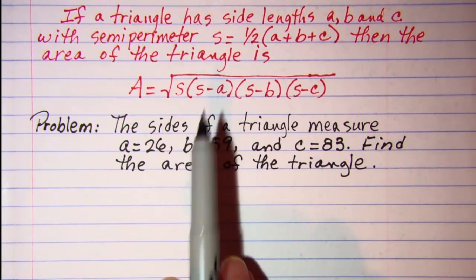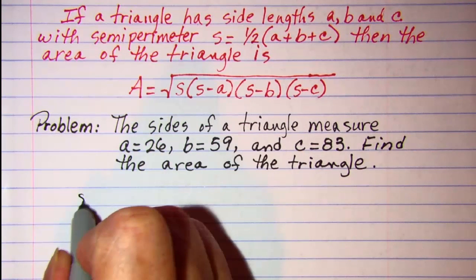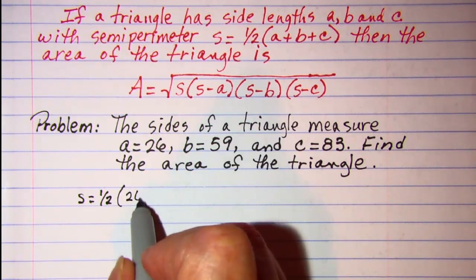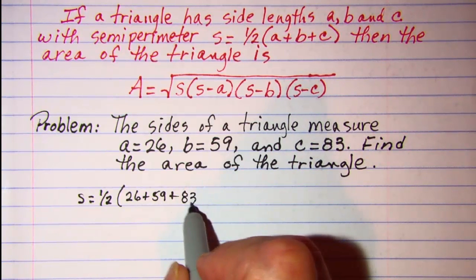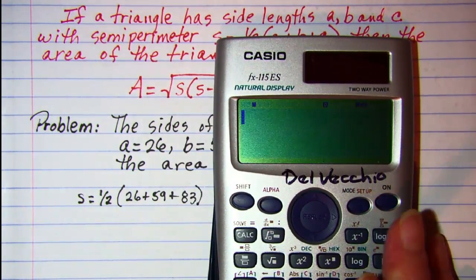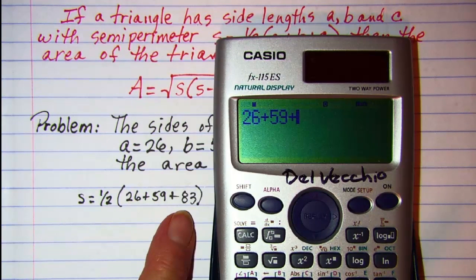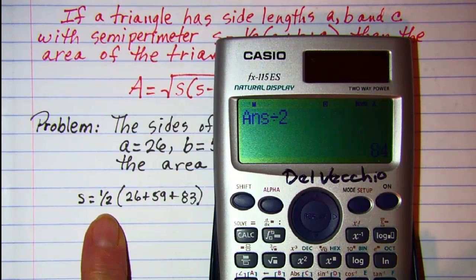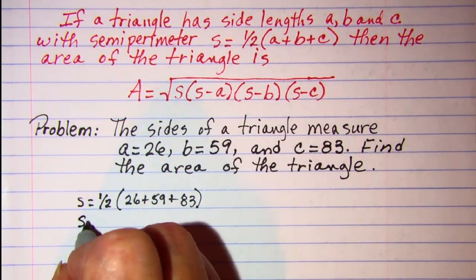So the first thing that I would do is find the semi-perimeter S. I know that S is half the sum of the three sides: 26 plus 59 plus 83. Let's grab our calculator and do that real quick. 26 plus 59 plus 83, and then we'll divide that by 2. And we have 84. S equals 84.